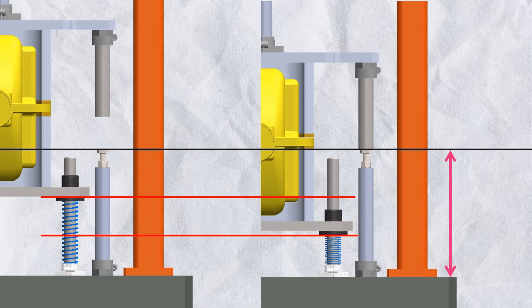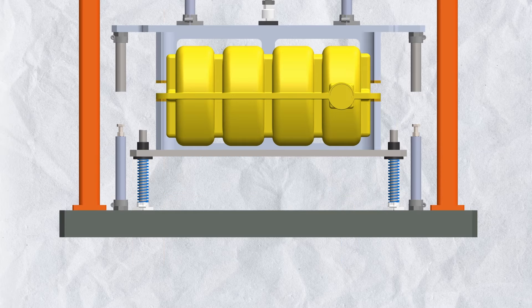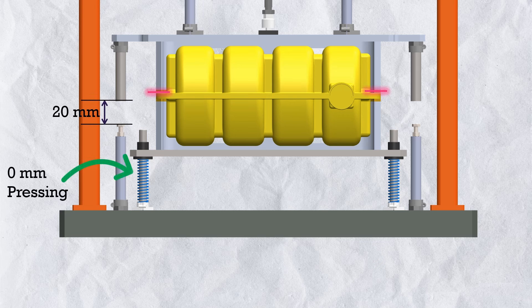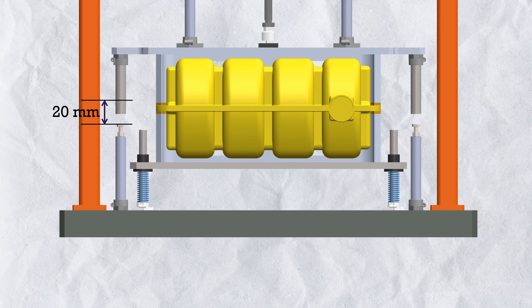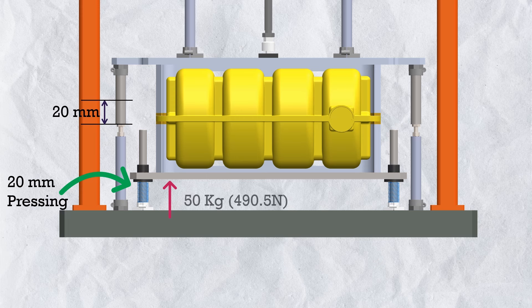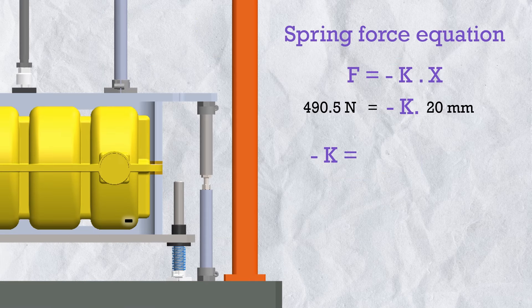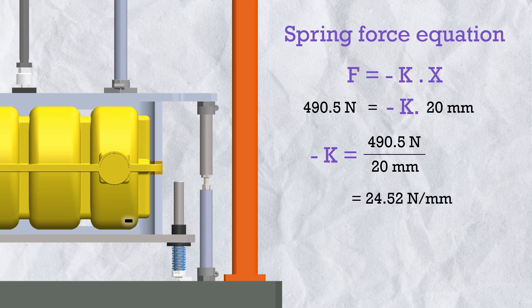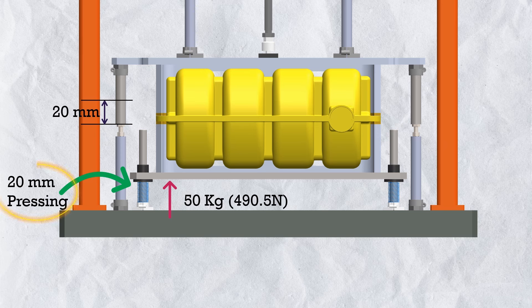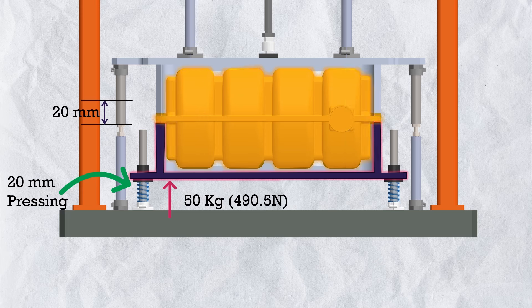For example, if X is 20 mm — meaning we will set the stopper at a level where the spring gets pressed by 20 mm — then at zero pressing where the top jig just touches the component, the spring reaction force would be zero. And when the spring gets pressed by 20 mm, the reaction force should be 50 kgf = 490.5 N. Means the spring constant should be 490.5 ÷ 20 = 24.52 N/mm. But here we are missing a very important thing — the load on the spring is not only the pressing load, there is also the initial weight load of the bottom fixture and the component.